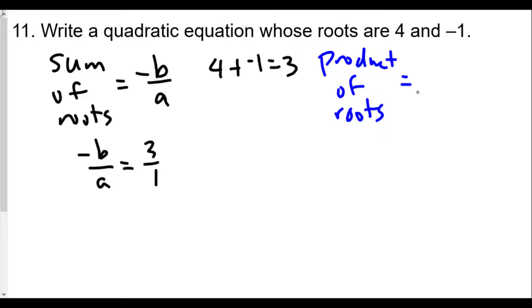And then I'll do some blue. Product of the roots is equal to c over a and therefore 4 times negative 1 is equal to negative 4 so that means c over a is equal to negative 4 over 1.